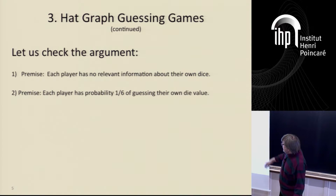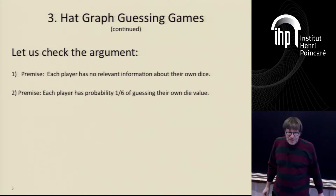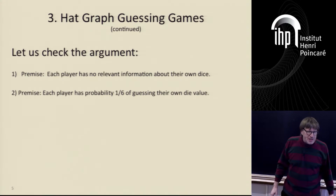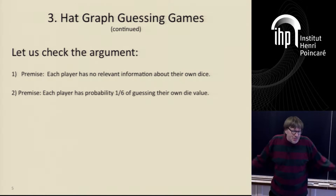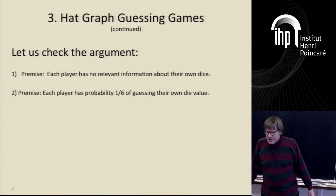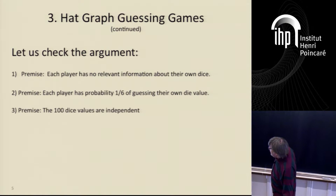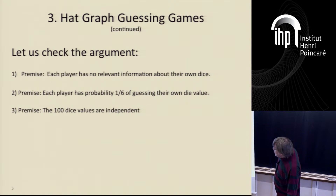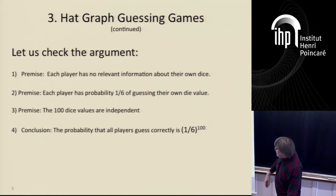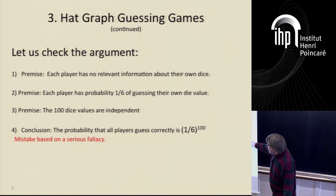You have a one-sixth probability of guessing your own value; you cannot change that even if you win a prize for guessing wrong. In one-sixth of the cases, you just guess it. You have absolutely no influence on that. And the values are independent. So why is this conclusion false?